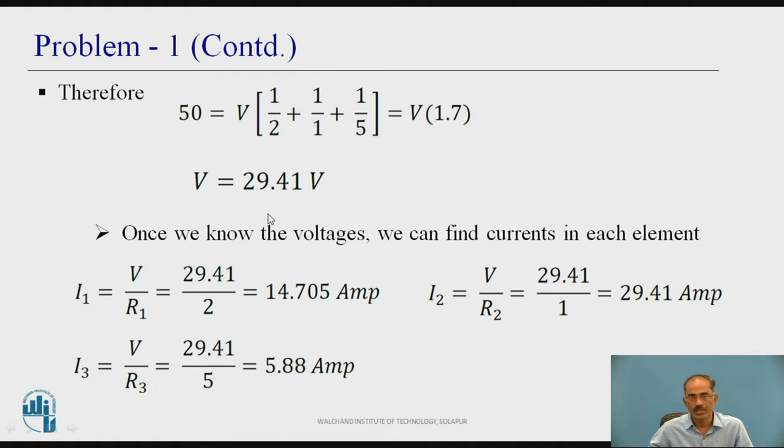If I simplify further, V becomes equal to 29.41 volt. This is the voltage across all the resistors. Once we know the voltage, we can find currents in each element. I1 equal to V by R1, so V already, we have calculated 29.41 divided by R1 is 2 ohm, which is 14.705 ampere.